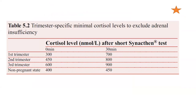Next is the trimester-specific minimal cortisol levels to exclude adrenal insufficiency. In pregnancy, the first trimester cutoff at 0 minutes is 300 and at 30 minutes is 700. Second trimester is 450 at baseline, and third trimester is 600. After the short synacthen test, stimulated cortisol above 800 for the second trimester and above 900 for the third trimester. In a non-pregnant state the baseline cutoff is more than 400 and stimulated cortisol after 30 minutes is more than 450.